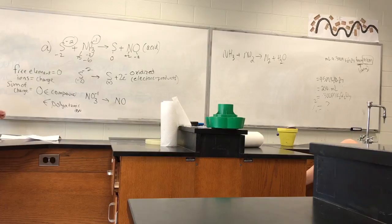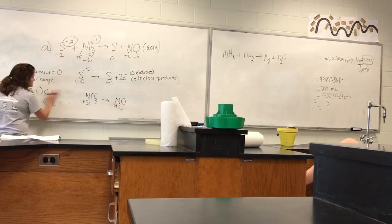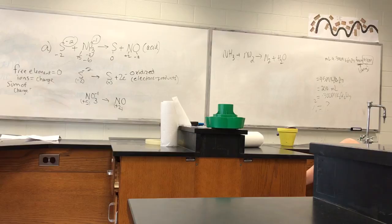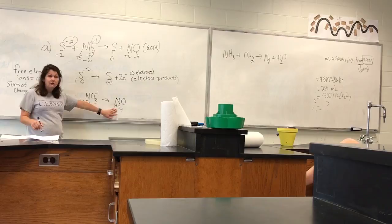So nitrogen over here was plus five, and over here it's plus two. So the question is, what happened to the nitrogen? It gained. It gained. It did. It gained electrons. Now look at how we know why. It went from positive five to positive two, which means it became more negative or less positive. Right? That's what happened.